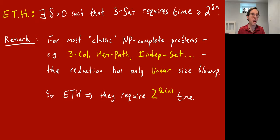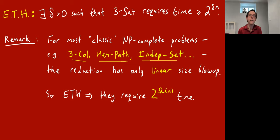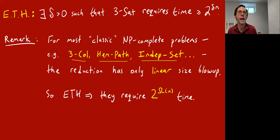In general, ETH is good for showing that your favorite NP-complete problem requires a large exponential amount of time. We saw that planar Hamiltonian path requires 2^(√N) time. For most classic NP-complete problems you learn about in a first course — 3-coloring, Hamiltonian path, independent set — those classic reductions tend to have only linear-sized blowup. That's why I chose the weird one, planar Hamiltonian path, as my example.